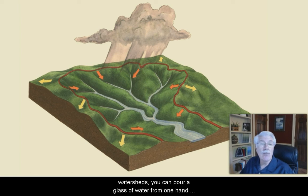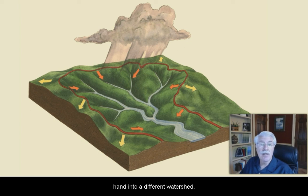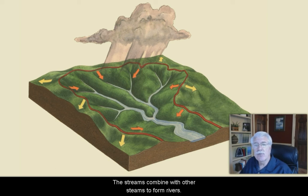If you stand on top of a mountain that divides two watersheds and you pour a glass of water from one hand onto one watershed and a glass of water from the other hand onto a different watershed, sooner or later the water from the two different glasses will end up in two different streams.